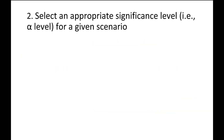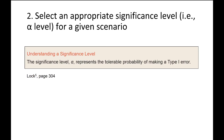Moving on to our second learning objective: select an appropriate significance level — in other words, alpha level — for a given scenario. Last week we learned that unless otherwise stated, we use an alpha level of 0.05. The textbook defines the significance level alpha as representing the tolerable probability of making a type 1 error.